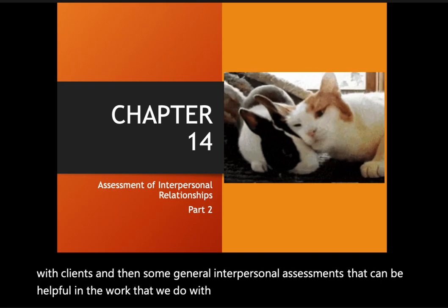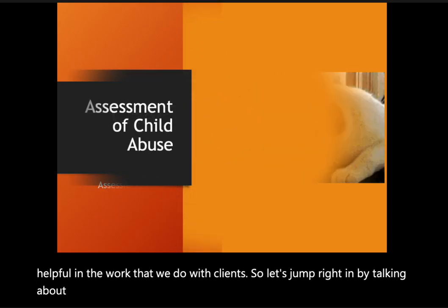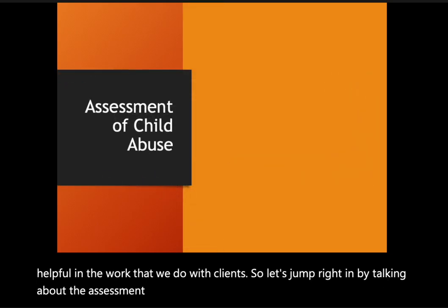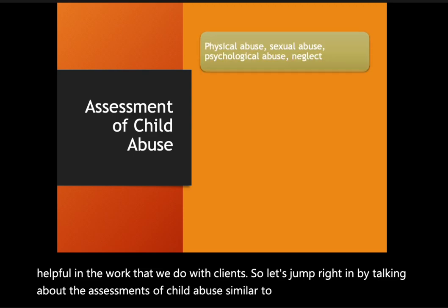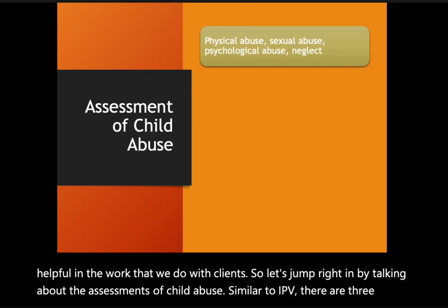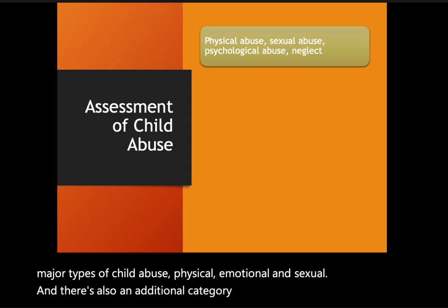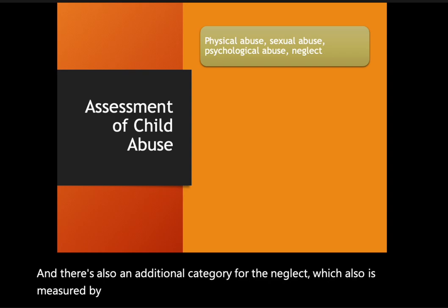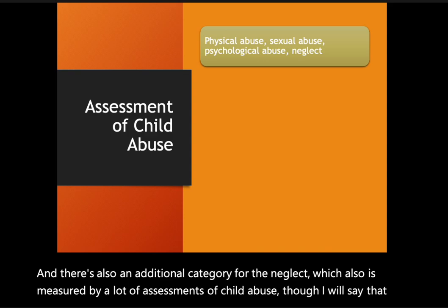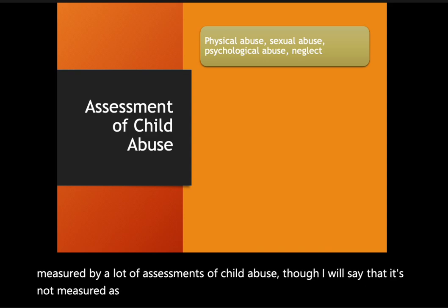Let's jump right in by talking about the assessments of child abuse. Similar to IPV, there are three major types of child abuse: physical, emotional, and sexual. There's also an additional category for neglect, which is measured by a lot of child abuse assessments, though it's not measured as well as we need it to be.